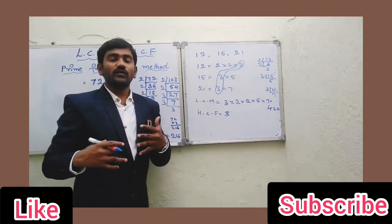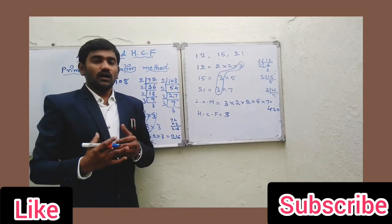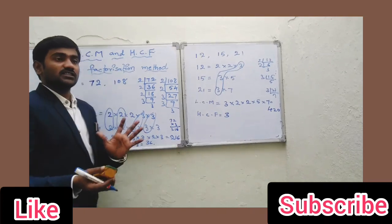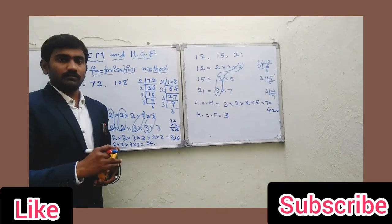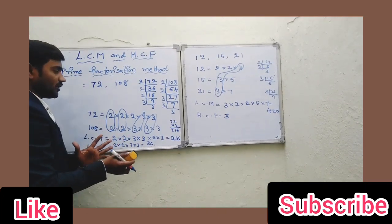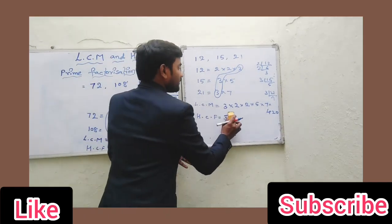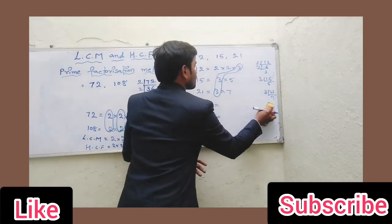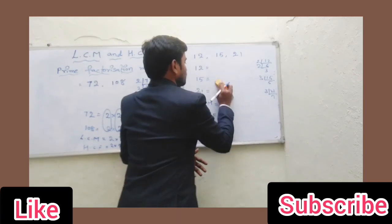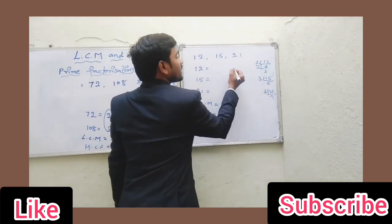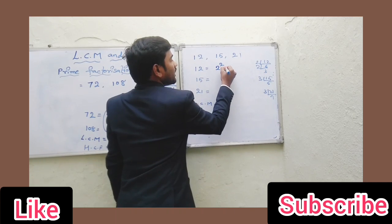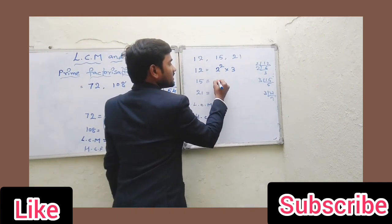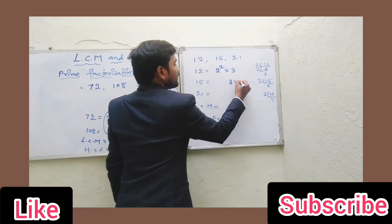In our tenth class we have another method called the prime factorization method based on powers — how to find LCM and HCF based on the powers of prime factors. I will explain this today. So here, 12 can be written as 2² × 3, and 15 can be written as 3 × 5.